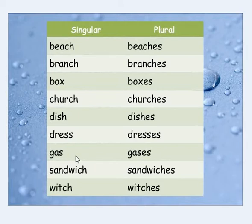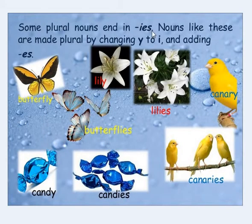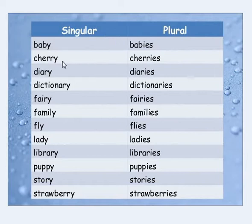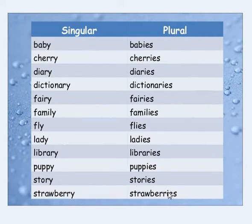Some plural nouns end in -ies. Nouns like these are made plural by changing the y to i and adding -es. For example: butterfly/butterflies, lily/lilies, canary/canaries, candy/candies, baby/babies, cherry/cherries, diary/diaries, dictionary/dictionaries, fairy/fairies, family/families, fly/flies, lady/ladies, library/libraries, puppy/puppies, story/stories, strawberry/strawberries.